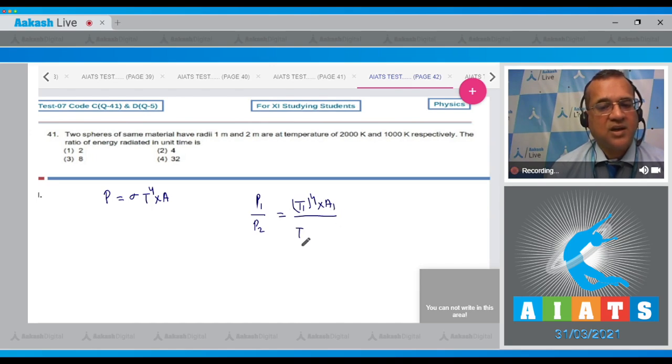For a spherical surface, area will be equal to 4πR². That is T1 by T2 to the power 4 into the area, which equals R1 by R2 squared.